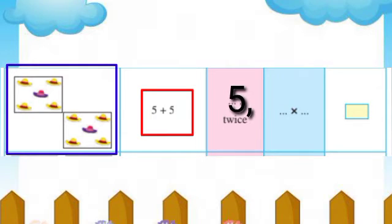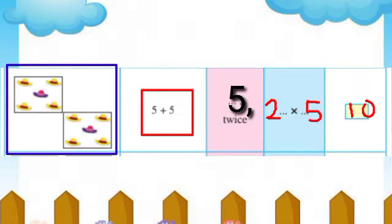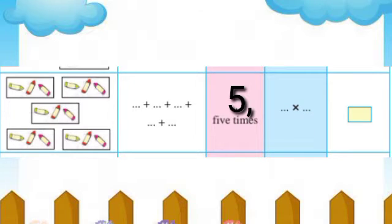How many times? Paachchi don pat — 2 multiplied by 5, kimva 5 multiplied by 2 ase hi lihoo shakto. Total number of objects — ata ekunvastoo kiti hotil? Ten — ekunh daha vastoo hotil.